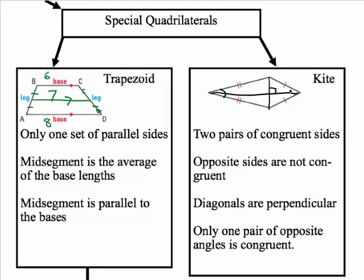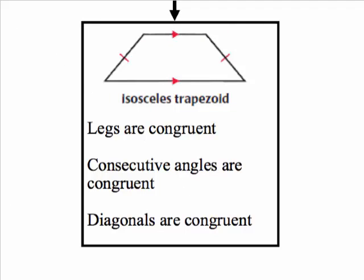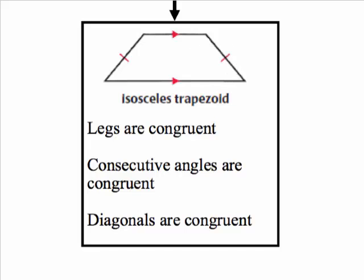In a kite, this angle here is congruent to the angle opposite it. For isosceles trapezoids: isosceles trapezoids are trapezoids that have congruent legs, so the two leg lengths will be the same measure. Their consecutive angles are congruent — this angle will be congruent to this one, and this angle will be congruent to this one. The last property is that the diagonals are also congruent — if you draw both diagonals, you'll note they are the same measure.